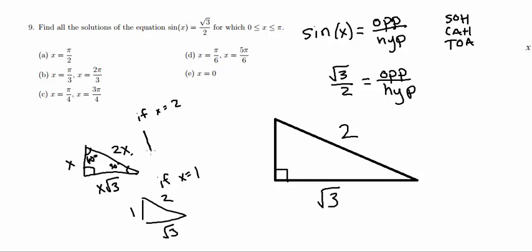Or if x is equal to 2, then we would have something like this. This side would be 2, this side would be 4, and this side would be 2 rad 3.